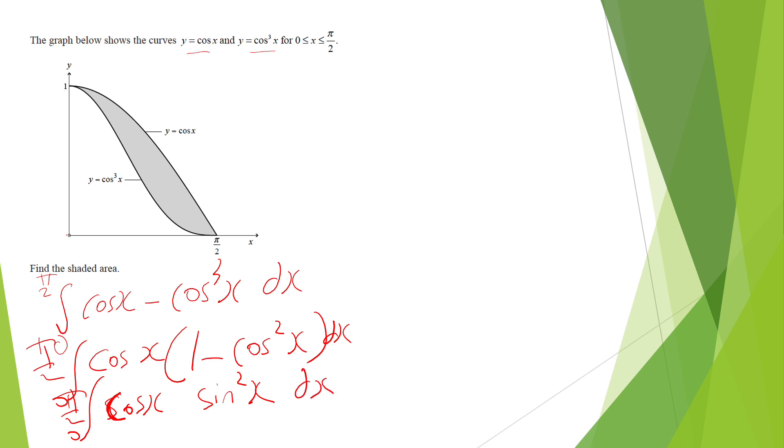And now I can't use any more trig identities. So 0 to π over 2. And now because it's sine squared multiplied by cosine, and cosine is the differentiation of sine, that's a hint you can use reverse chain rule or substitution. I'm going to use substitution.